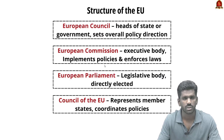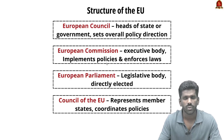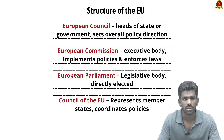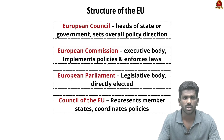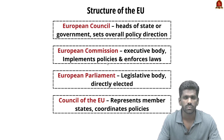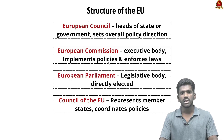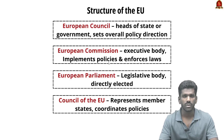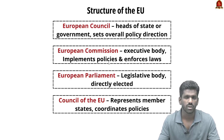In 2016, the Brexit referendum saw 52% of UK voters choose to leave the EU, and in 2020, the UK officially exited. The EU structure includes: the European Council (heads of state setting overall policy direction), the European Commission (executive body for policy implementation and law enforcement), the European Parliament (legislative body directly elected by EU citizens), and the Council of the European Union (representing member states for legislation and policy coordination).